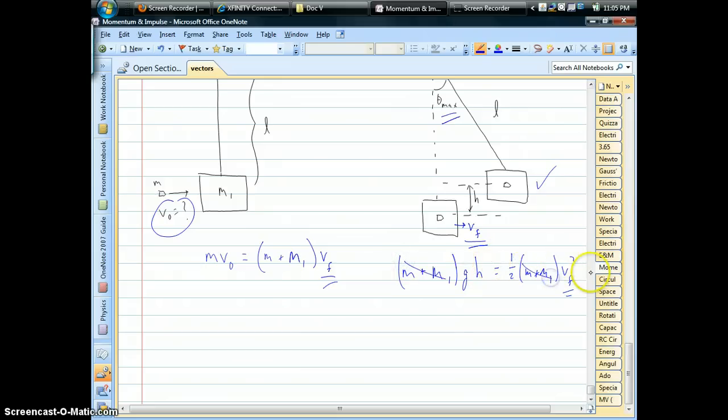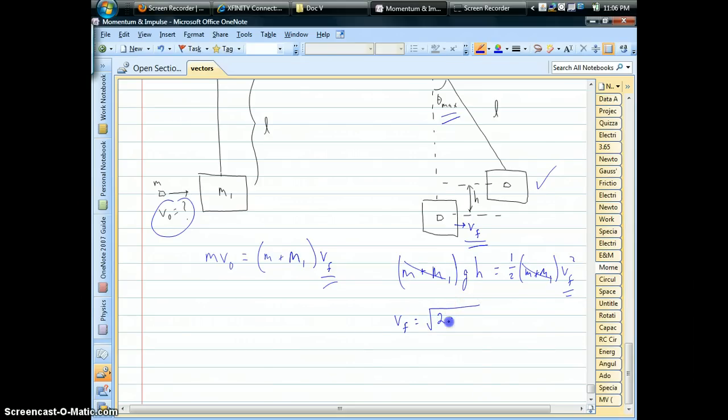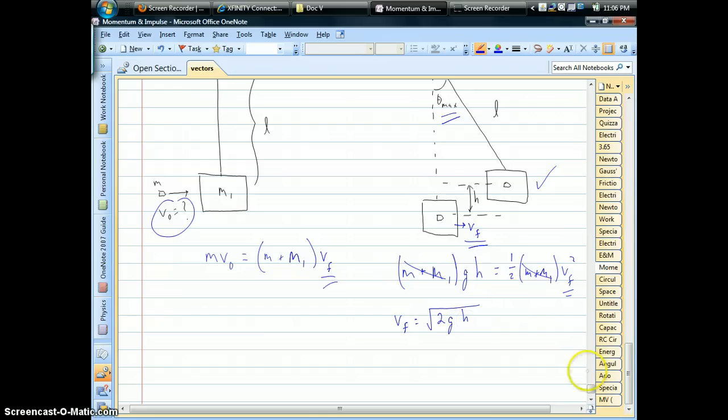Notice that the mass of the system drops out. So v_final, if we solve for that, is going to be what? The square root of the 2 comes up times 9.8 times whatever the height is.